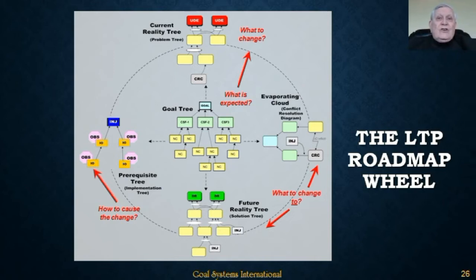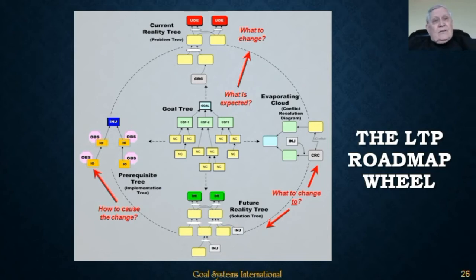Together, the Evaporating Cloud and the Future Reality Tree answer the question: what to change to? Once the proposed solutions to the system problems have been verified as effective — to the extent possible without actually taking action yet — the cycle moves on to execution: how to make the required changes happen. We determine the execution steps with a Prerequisite or Execution Tree.